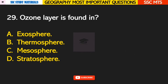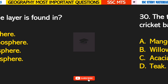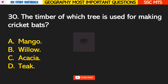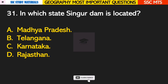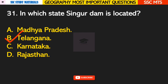Question number 29: the ozone layer is found in? Answer D — it is found in the stratosphere. Question number 30: the timber of which tree is used for making cricket bats? Answer B — willow.